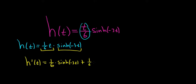So sinh of negative 3t plus the first piece. So 1/6 t times the derivative of the second piece. So the derivative of sinh is cosh. So we have cosh of negative 3t, but we have to use the chain rule. So now we have to multiply by the derivative of the inside function. In this case, the inside function is negative 3t, so its derivative is negative 3.